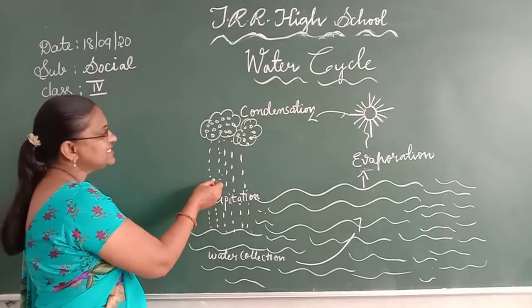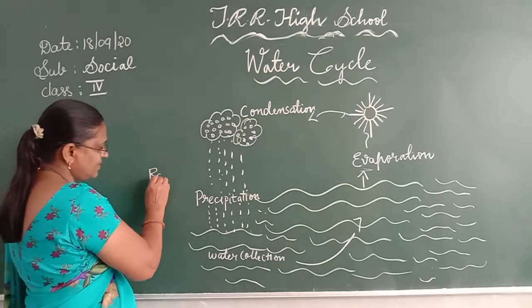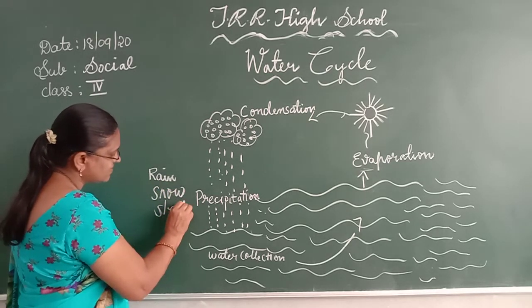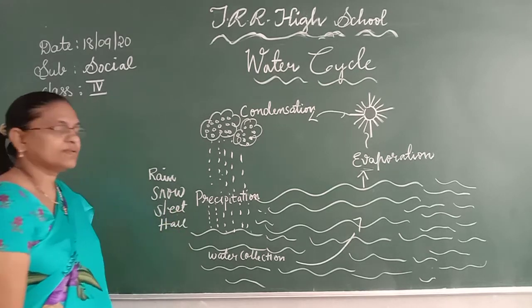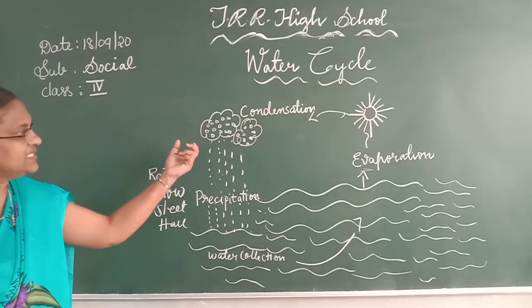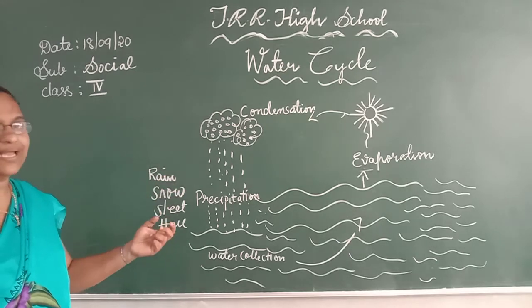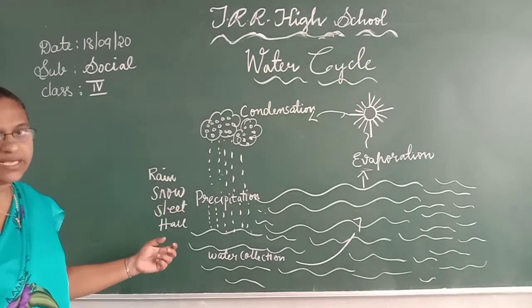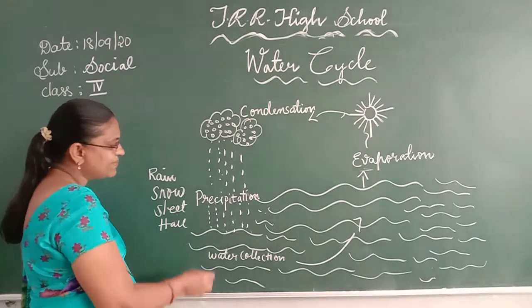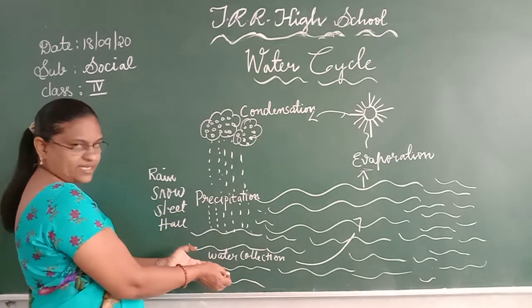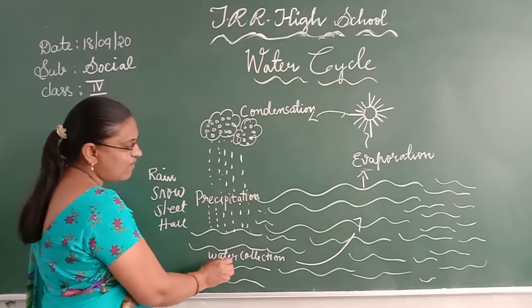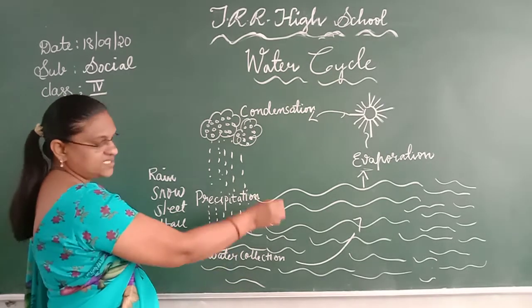After precipitation, water falls in different forms — it falls like rain, snow, sleet, and hail. This process is called precipitation. After precipitation, the water falls back into the water bodies. That is called water collection.